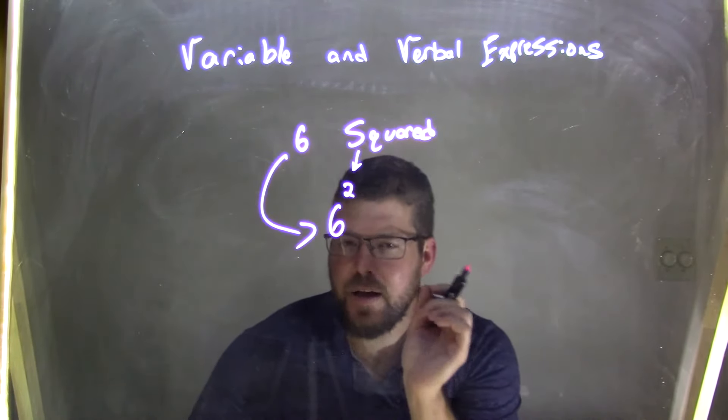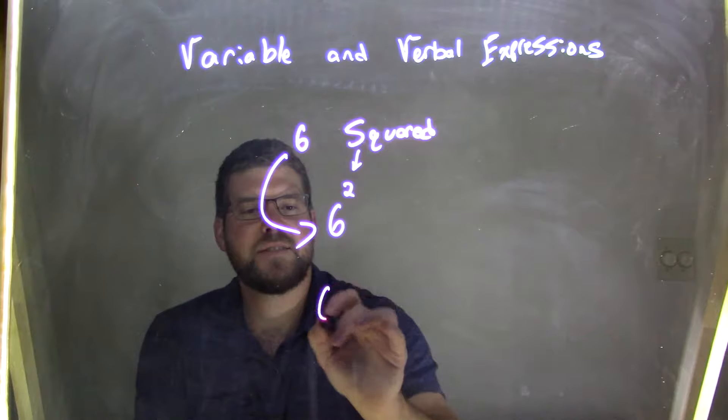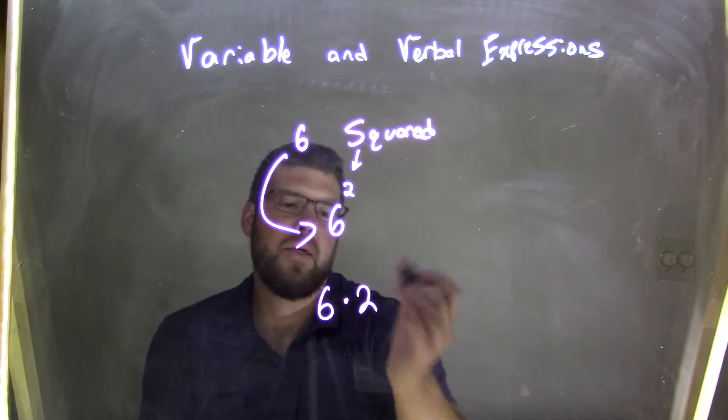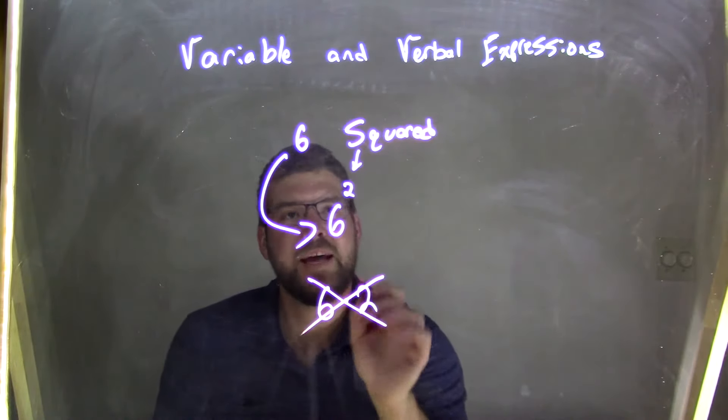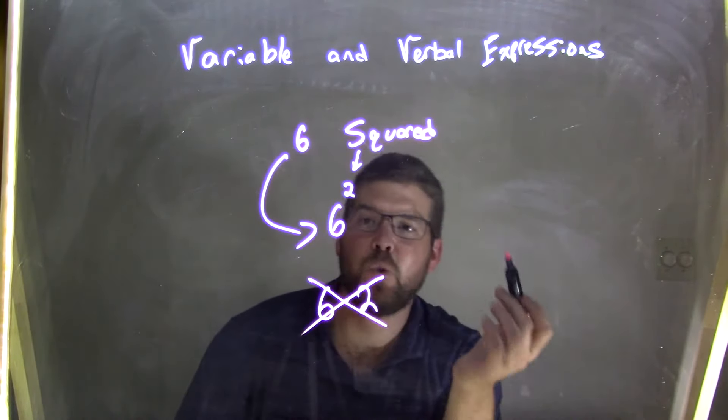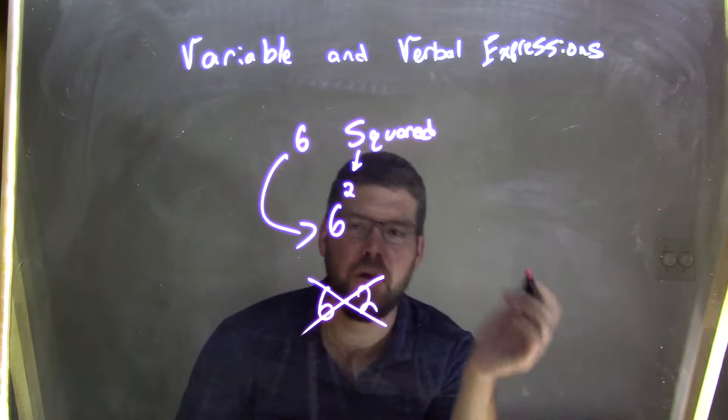Now a common thing I see is I'll see students take 6 squared, multiply it by 2, and then they'll simplify it and say it's 12. That's wrong, that's multiplication. That is not squared. 6 squared is 6 times 6, which is 36.